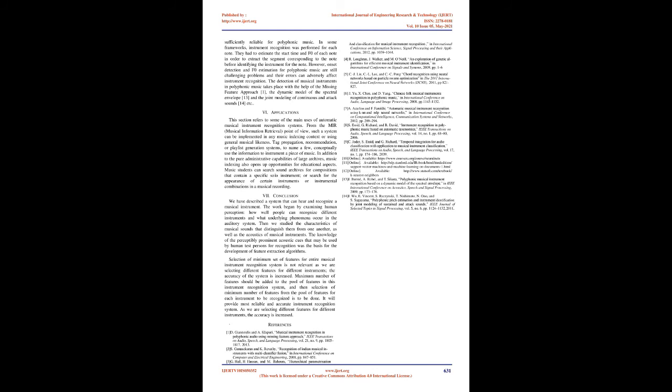Applications. This section refers to some of the main uses of automatic musical instrument recognition systems. From the music information retrieval point of view, such a system can be implemented in any music indexing context using general musical likeness — tag propagation, recommendation, or playlist generation systems conceptually use instrument information. In addition to administrative capabilities for large archives, music indexing opens up educational opportunities. Music students can search sound archives for compositions containing a specific solo instrument or search for the appearance of certain instruments or instrumental combinations in a musical recording.